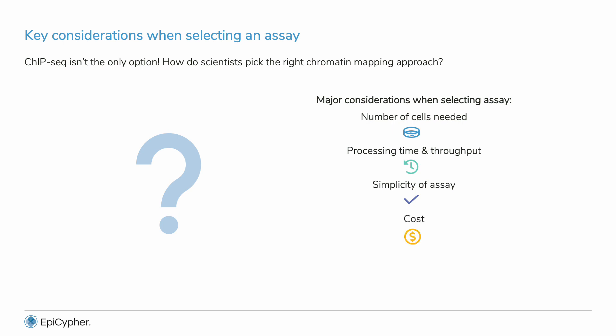The major cost of chromatin mapping assays is sequencing. More sequencing per reaction increases costs and restricts experimental scale. You also want data specific for your target with low off-target background. Reproducibility across reactions is also crucial.